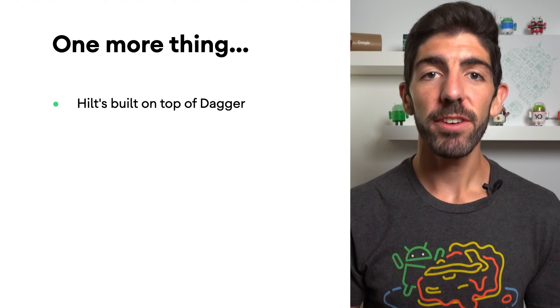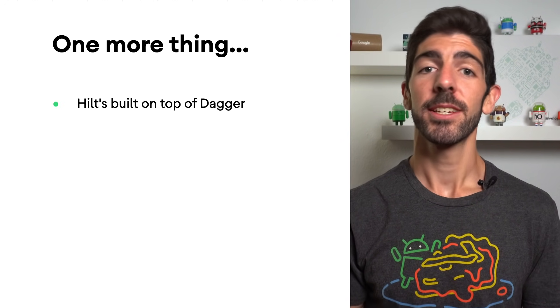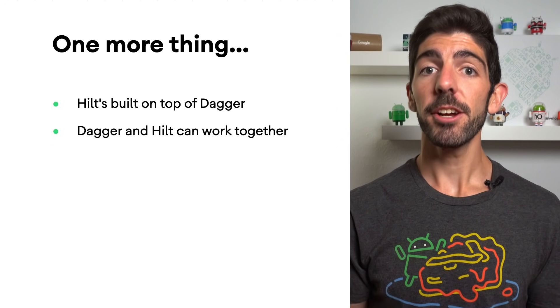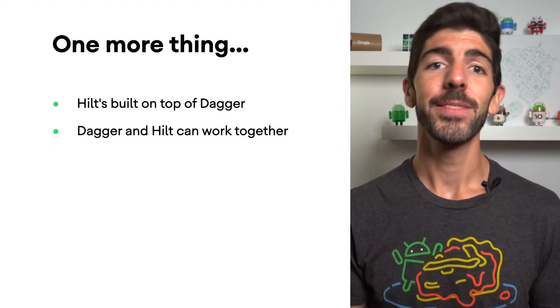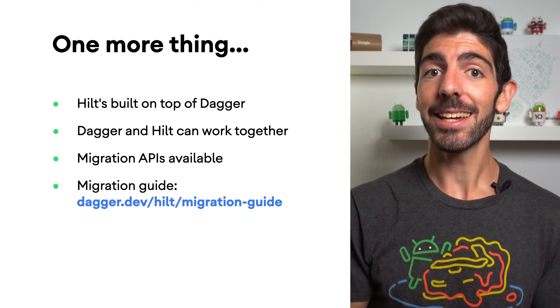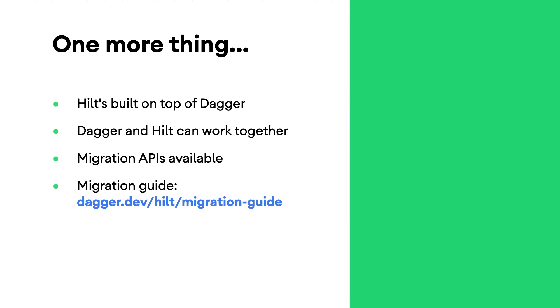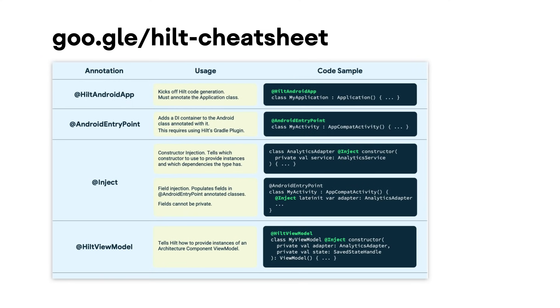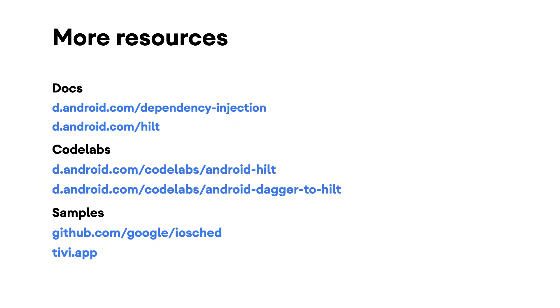Hilt is built on top of another popular dependency injection library, Dagger, which will be often mentioned in the next episodes. If you're already using Dagger, Dagger and Hilt can work together — read more about the migration APIs in the guide linked in the description. For more information about Hilt, we have a cheat sheet with the most popular annotations, what they do, and how to use them. We also have codelabs for a more hands-on experience, and open-source apps that use Hilt.